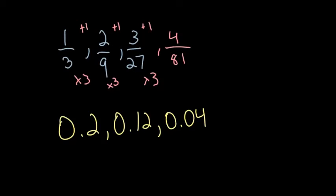Alright, next one, we've got two-tenths, twelve-hundredths, four-hundredths. So we're going down, so to get from two-tenths to twelve-hundredths, that's minus eight-hundredths. And then to get from twelve-hundredths to four-hundredths, that's again minus eight-hundredths. So we've got a pattern there.